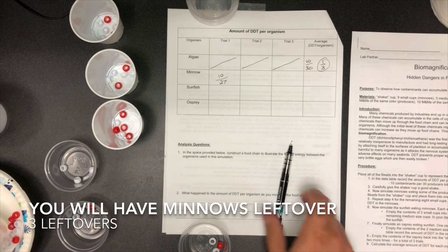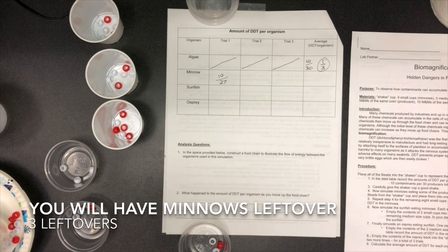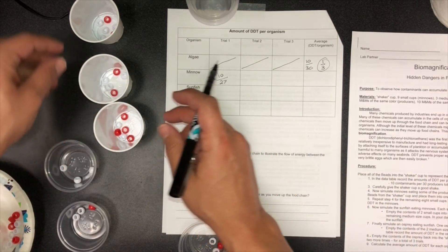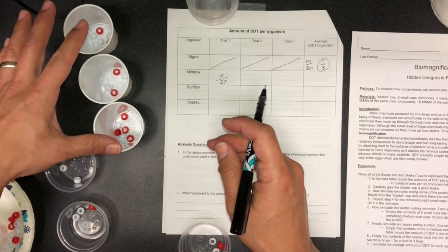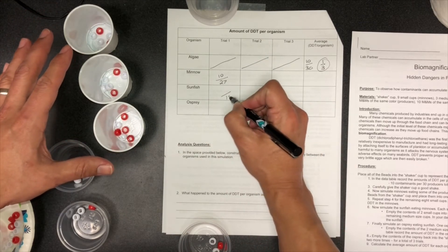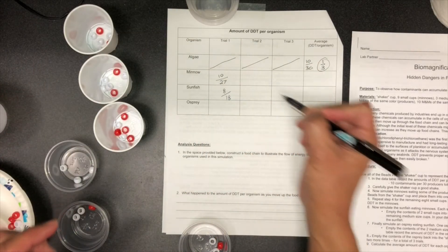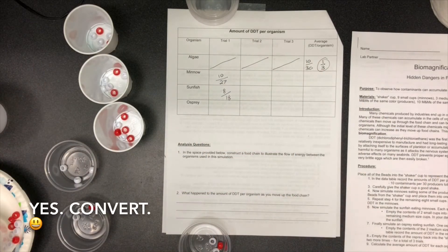That's it. In your data table, record the amount of DDT in the sunfish. So now we have 18 beads. How many are red? One, two, three, four, five, six, seven, eight. Eight out of 18 are red. And again, you can convert that to a decimal if you want, might make things easier towards the end.